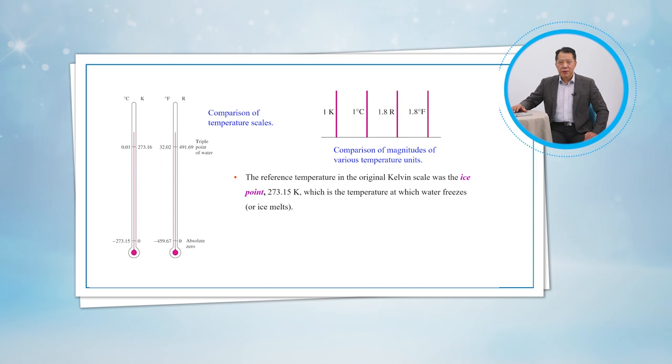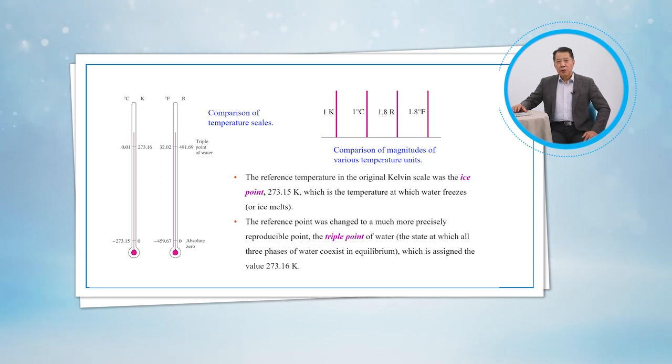The reference temperature in the original Kelvin scale was the ice point, 273.15 K, which is the temperature at which water freezes. The reference point was changed to a much more precisely reproducible point, the triple point of water, which is assigned the value of 273.16 K.